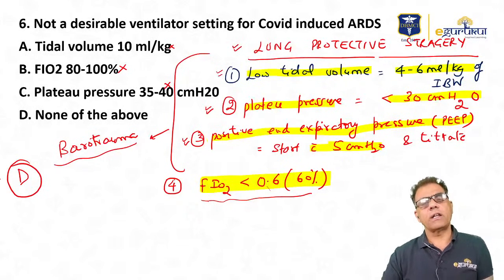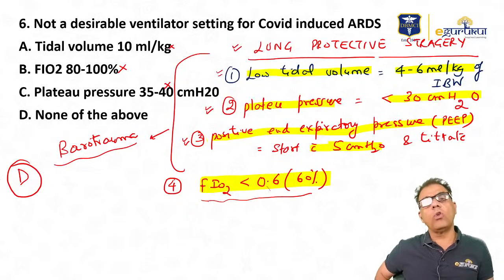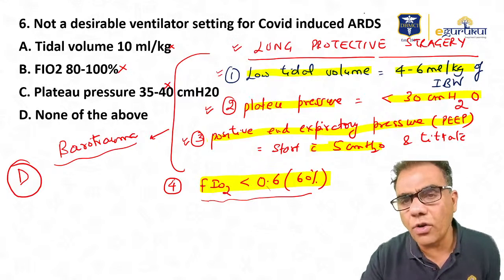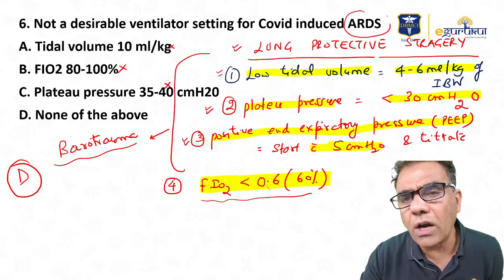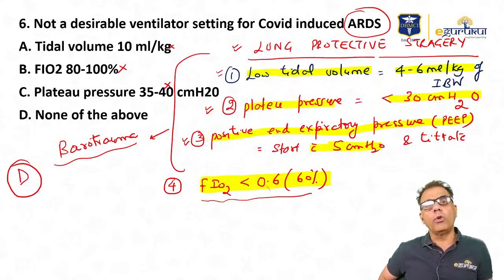So the ventilator settings described are for ARDS — not only COVID-induced ARDS, but actually for all kinds of ARDS whether due to COVID or any other reason.